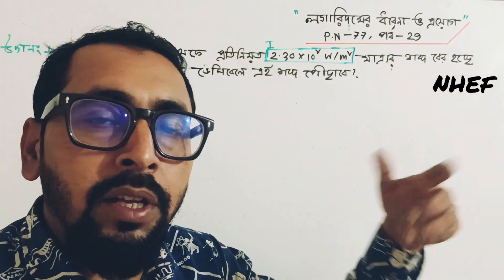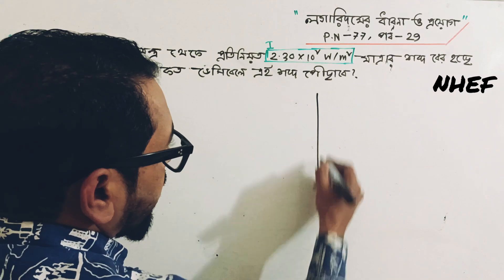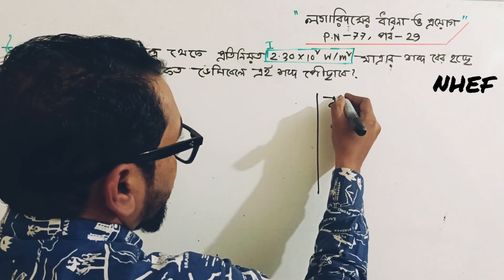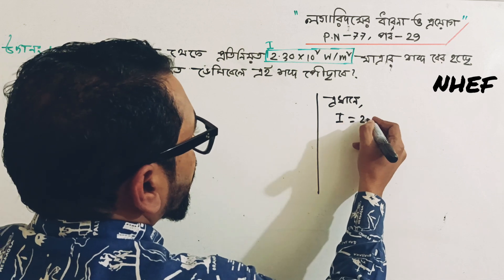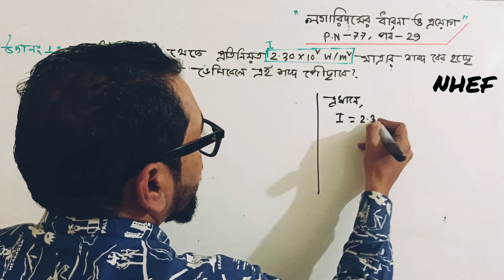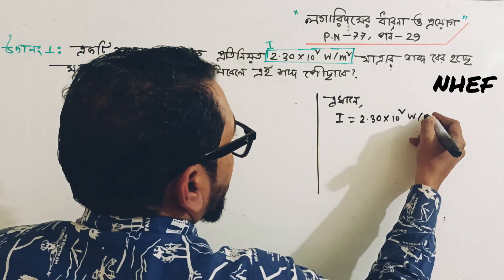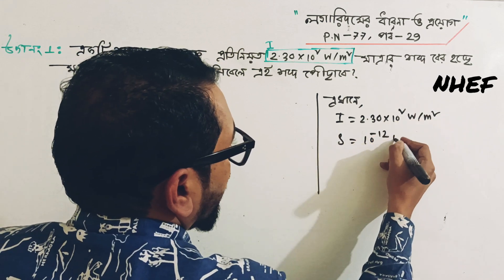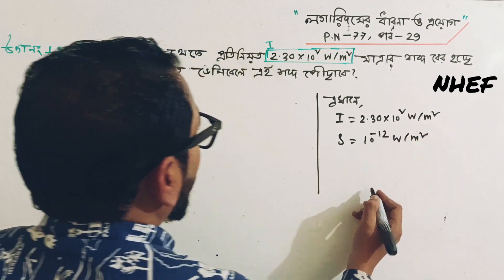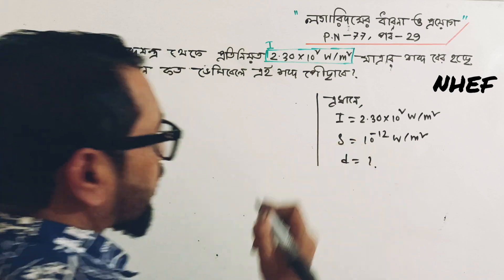This is the decibel. Decibel is the decibel — here we have to write here. I is equal to 2.30 × 10 to the power 2 watt per meter square, and if you have to write 10 to the power minus 12 watt per meter square — D is equal to what?